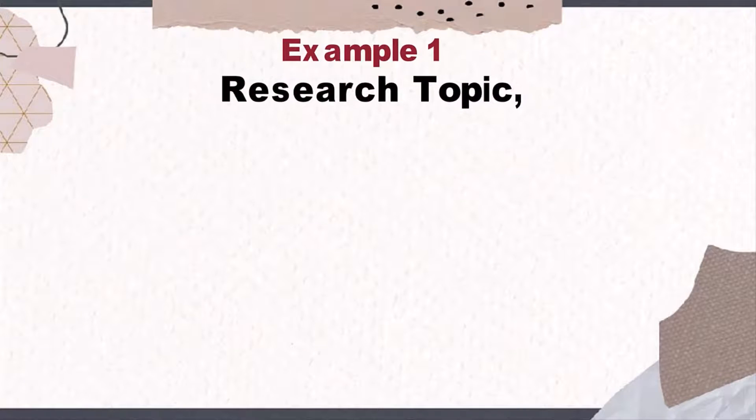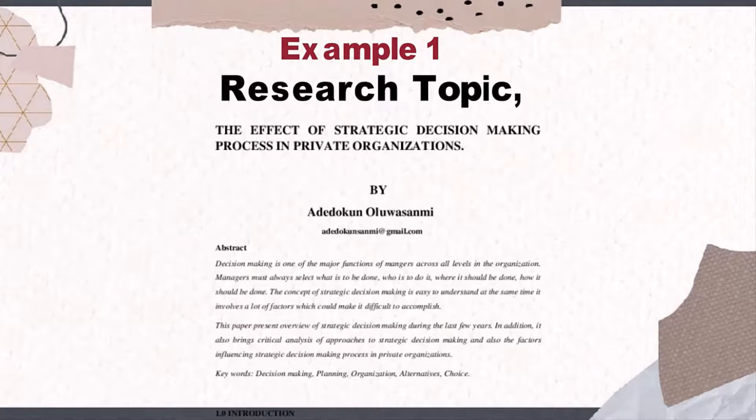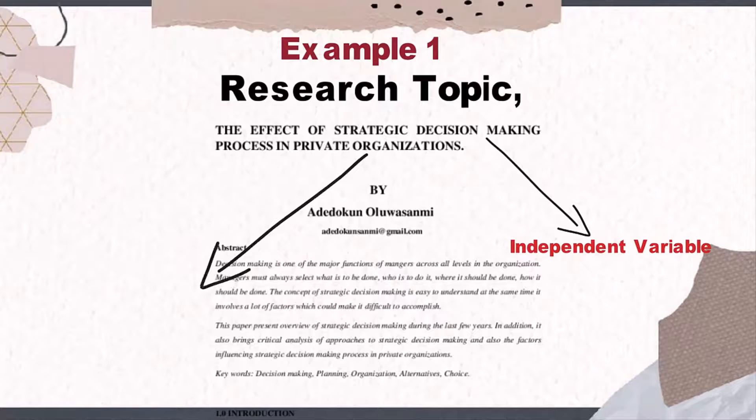Example 1: The research topic is decision-making and its impact on an organization. Decision-making influences the organization, therefore this is the independent variable. The organization is being impacted on, therefore this is the dependent variable.